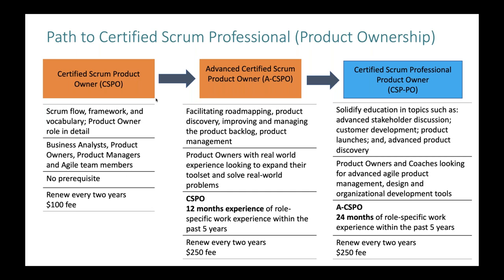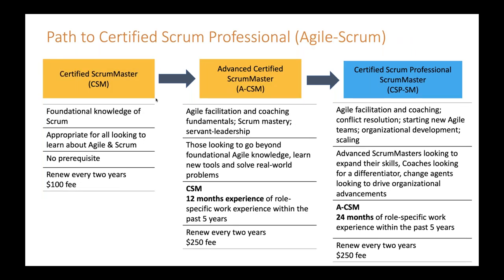The product owner path works much the same way. For the basic CSPO there's no test — you simply gain the certification from taking the workshop. For the ACSPO and the CSPPO, similar to the scrum master path, you have to submit a brief description of relevant work experience. Why go for the higher-level certifications? What most distinguishes them is that they're much more experiential, based on real-world experiences. Every provider creates their own materials, so while tied to the same learning objectives, you'll find wide variation in how classes are delivered.